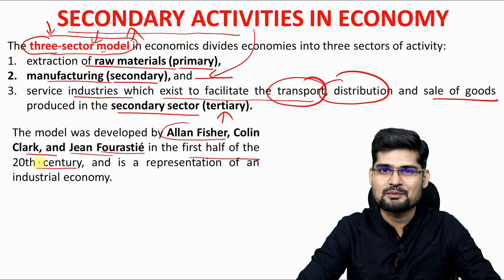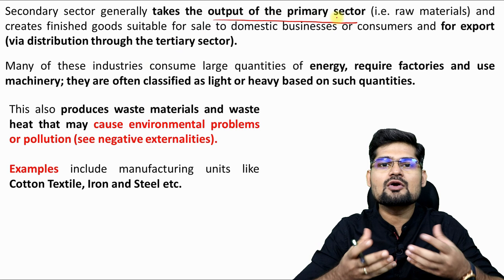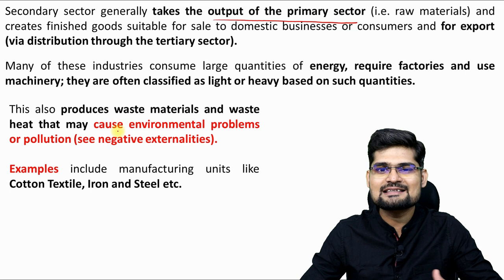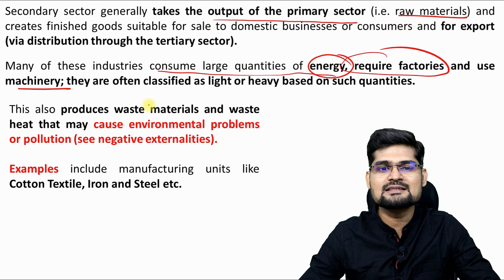What is the secondary sector? It basically takes the output of the primary sector — meaning the primary sector contributes as a raw material source for the secondary sector, and the secondary sector does the processing. Many of these industries consume large quantities of energy, require factories, and use machinery to convert the primary resources — the raw materials — in order to make them fit for the market.